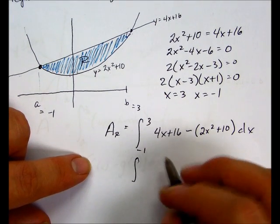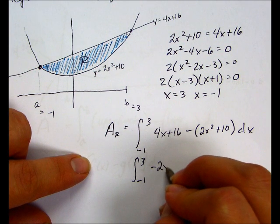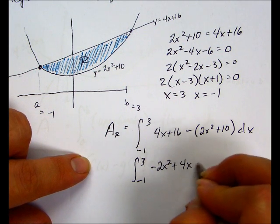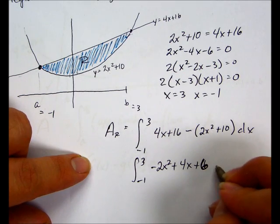So we're going to have the integral from negative 1 to 3 of negative 2x squared plus 4x plus 6 dx.